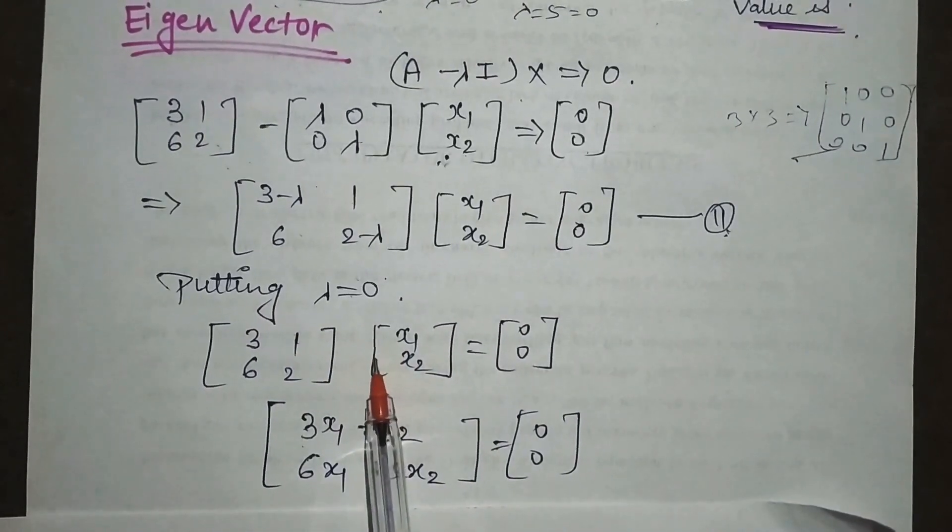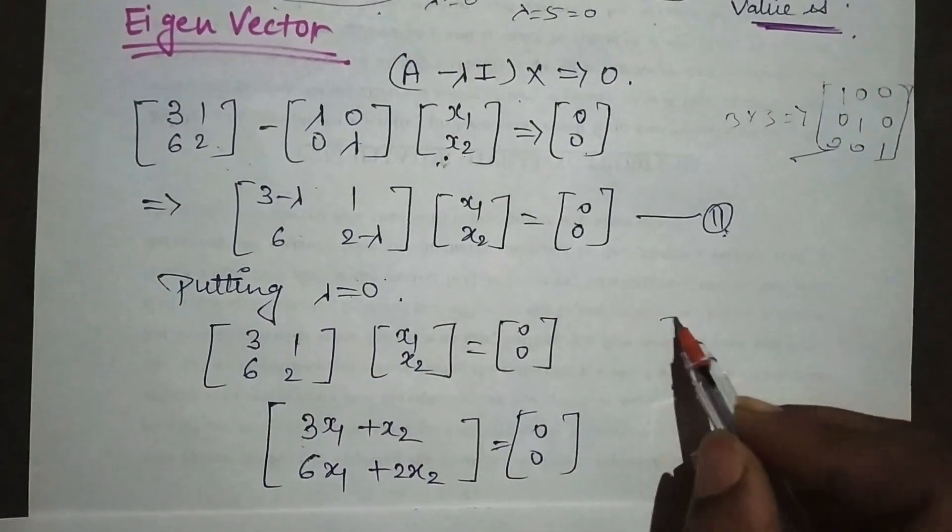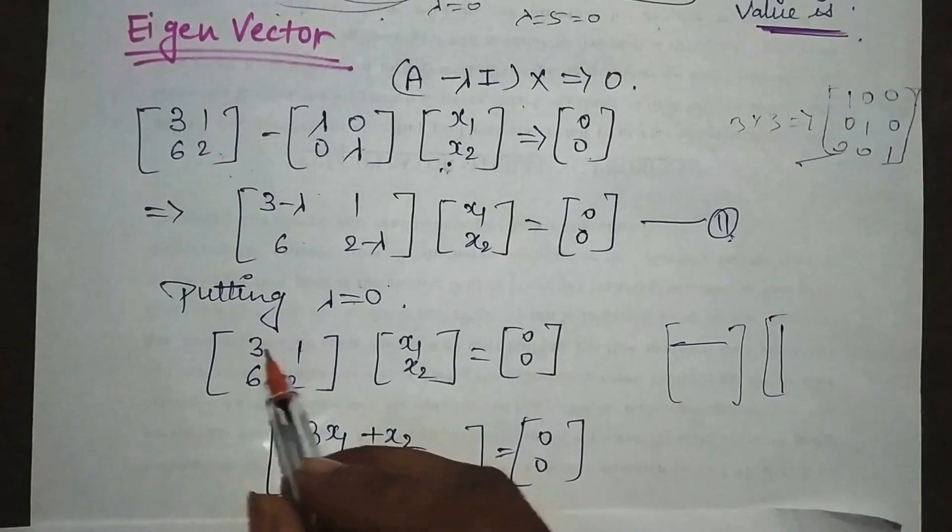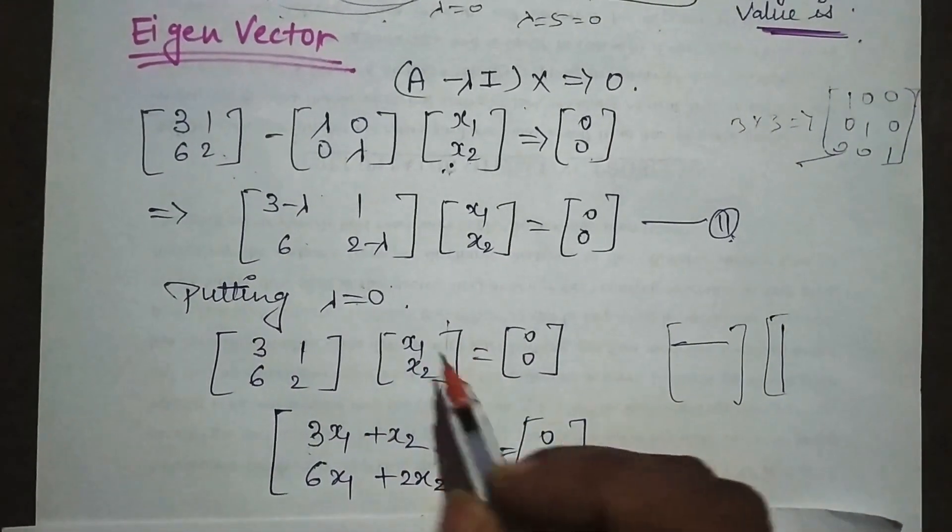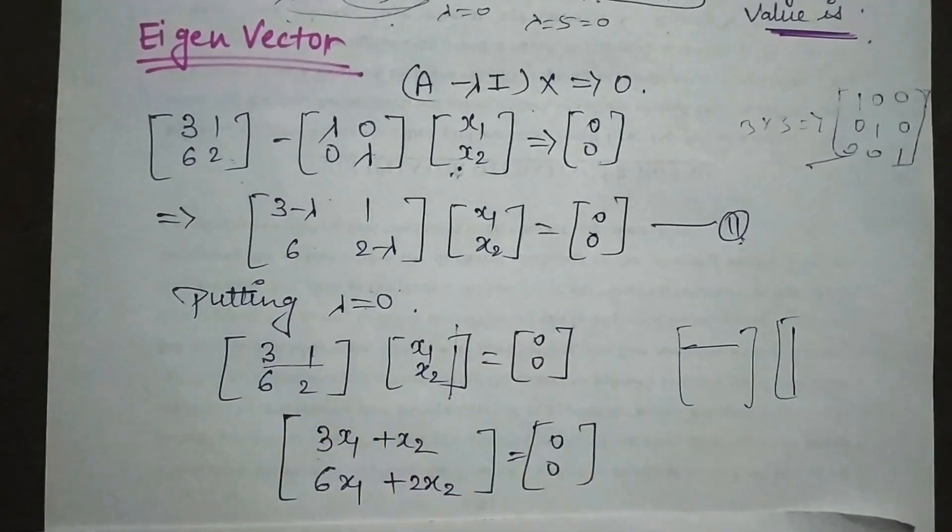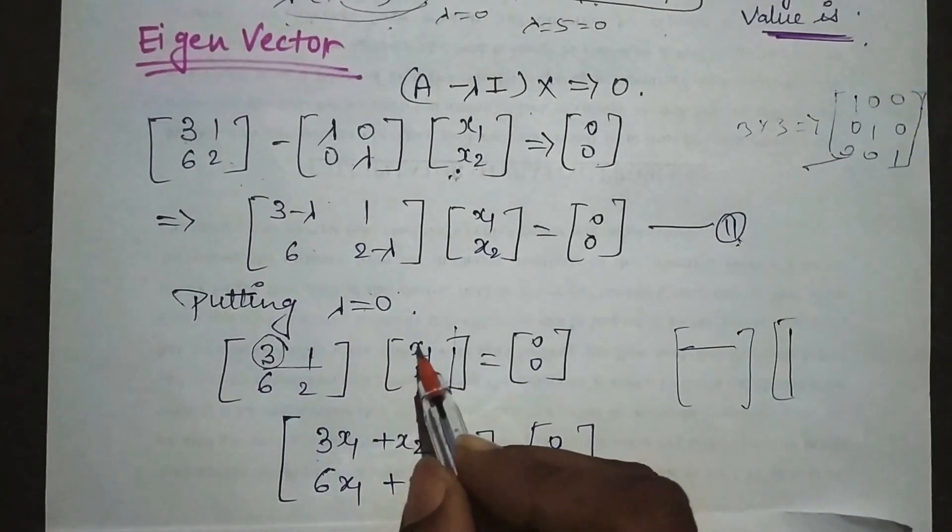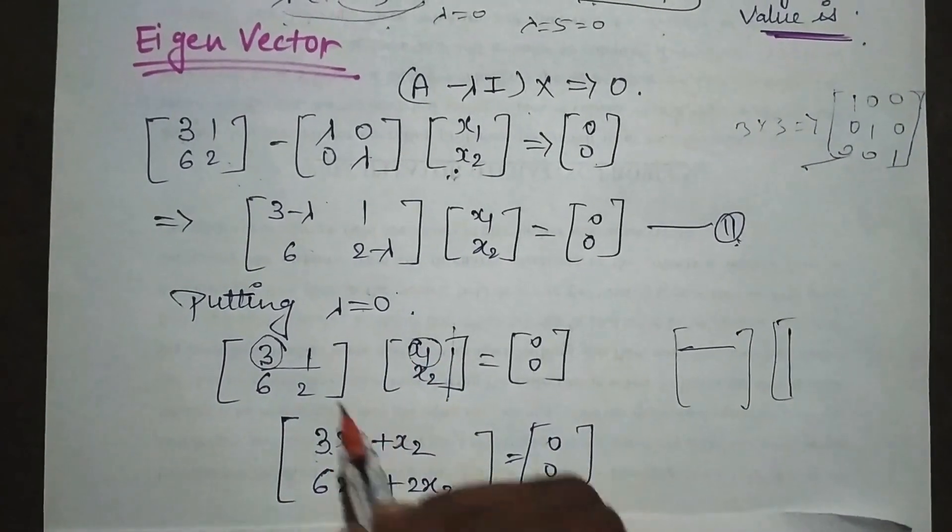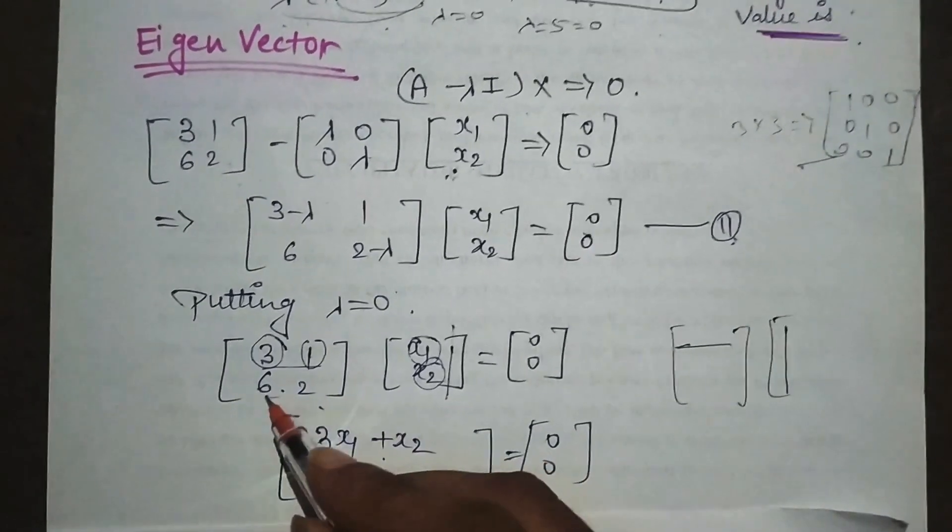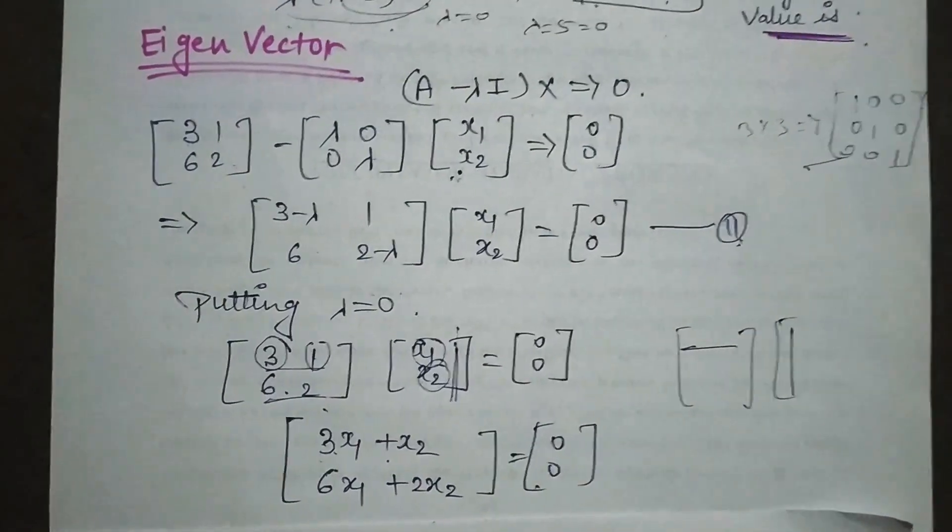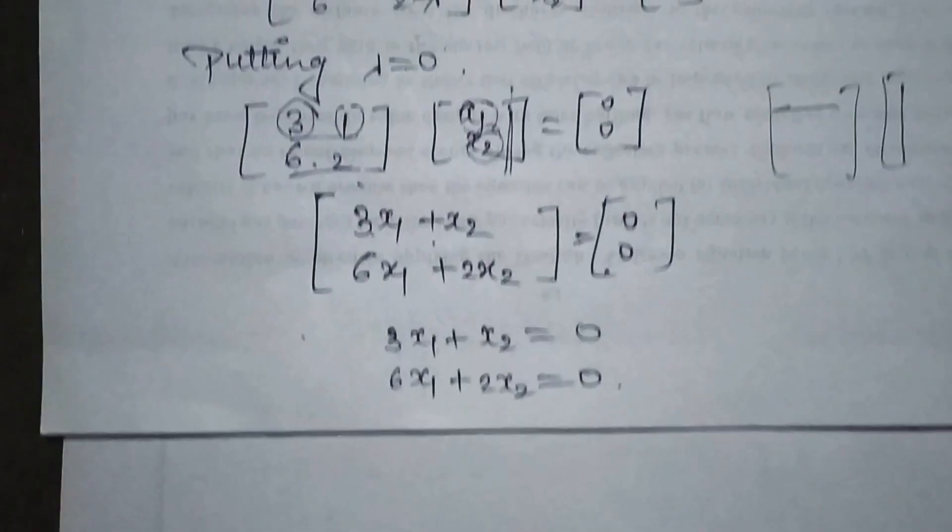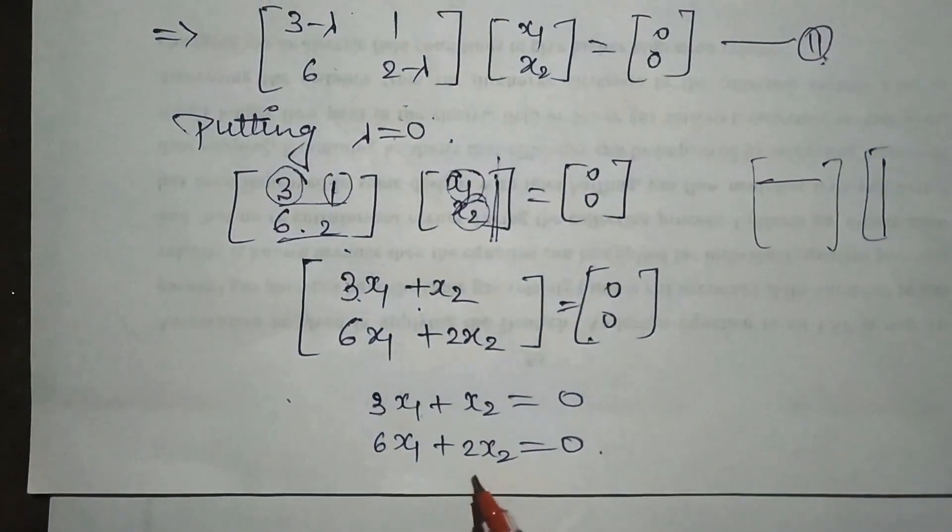There is a multiplication sign between these two, so we multiply them using the matrix multiplication rule: this row multiplies with this column. Three multiplies with x₁ plus one multiplies with x₂. Similarly, we multiply the bottom row. This equals zero. Both equations must equal zero.